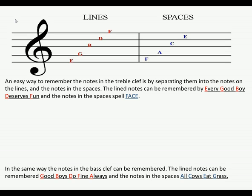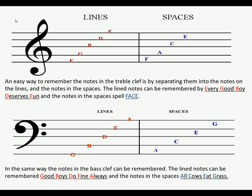In the same way, the notes in the bass clef can be remembered: the line notes by 'Good Boys Do Fine Always,' and the notes in the spaces by 'All Cows Eat Grass.' On the lines: G, B, D, F, A — Good Boys Do Fine Always — and on the spaces: A, C, E, G — All Cows Eat Grass.